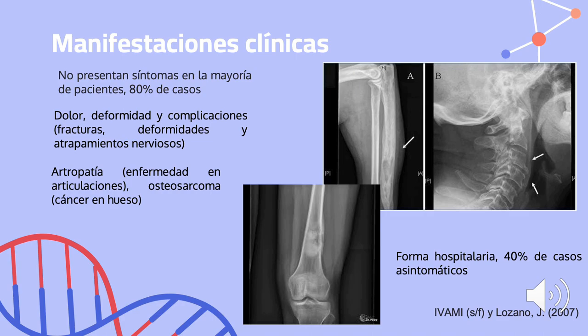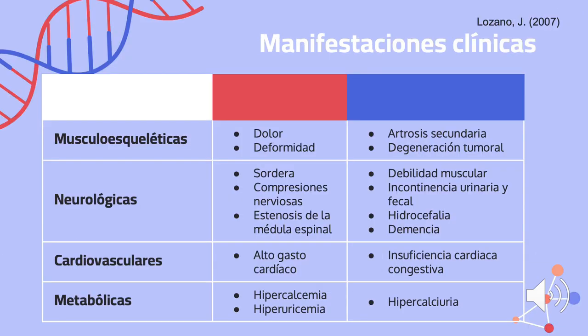También puede haber artropatía, que es una enfermedad en las articulaciones que puede provocar una movilidad limitada de la articulación, y también osteosarcoma, que es la presencia de cáncer en el hueso. Las manifestaciones musculoesqueléticas comprenden dolor, deformidad, y artrosis secundaria. La artrosis afecta al cartílago articular, al hueso y a la membrana sinovial, llevando en sus etapas más tardías a la degeneración del cartílago, produciendo dolor, pérdida de funcionalidad y degeneración tumoral, que es la degeneración de las células tumorales que tienen la capacidad de ignorar estímulos que pueden bloquear la división celular.